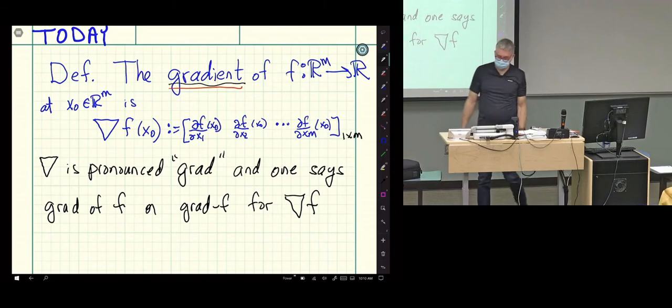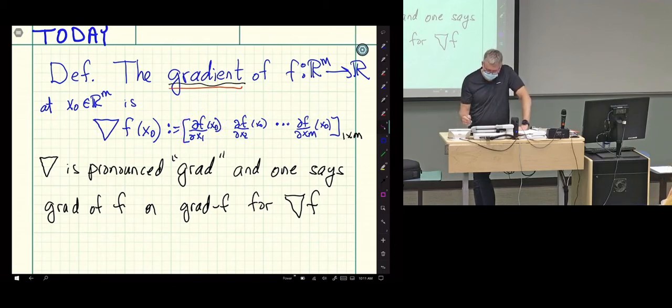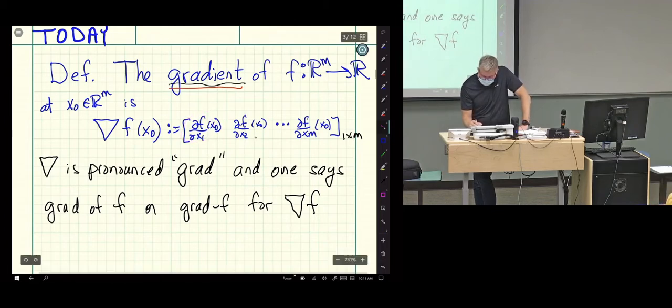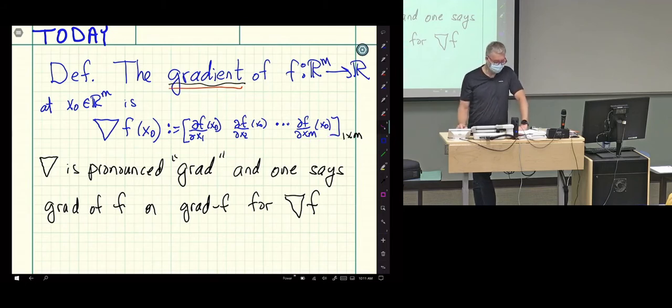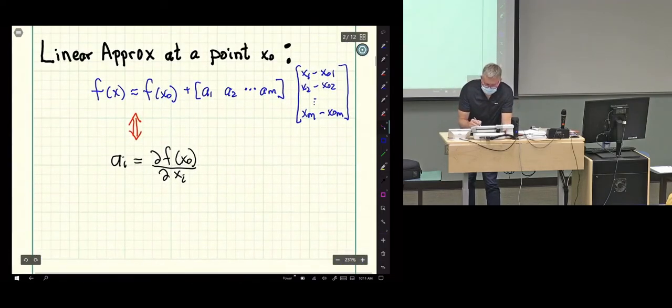How do you compute it? If you are like me, you most often do when it's numerical, you do a symmetric difference. Hold all the components constant except the first one, get the first component. Hold all the components constant except the second one, do a symmetric difference. Hold all the components constant except the last one, stack those up in a vector. You've got the gradient.